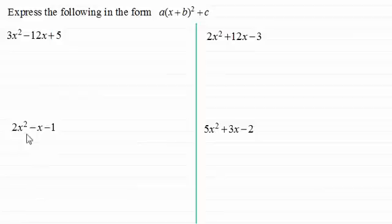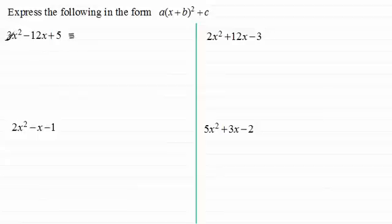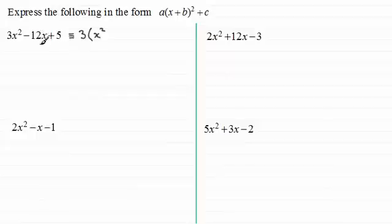When we've got something like 3x squared minus 12x plus 5 and we've got to express it in completed-the-square format, what we do is take out whatever value we've got in front of the x squared term, pulling it out across the first two terms — the x squared term and the x term. So for this one we've got 3 bracket, then x squared, to give us 3x squared, and then minus 4x to give us the minus 12x. And then we just put the last term down, so in this example it's going to be plus 5.